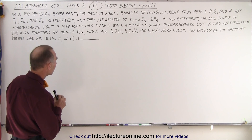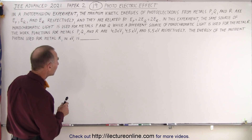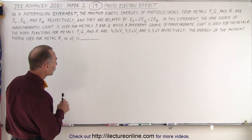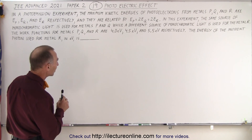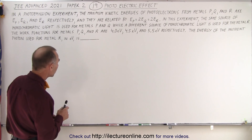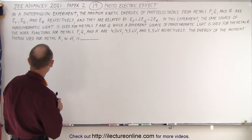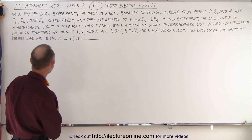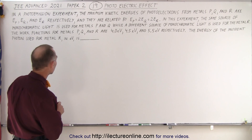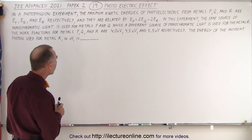They are related by E_p = 2·E_q = 2·E_r. In this experiment, the same source of monochromatic light is used for metals p and q,